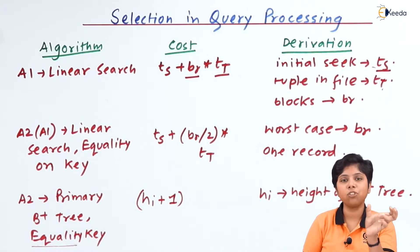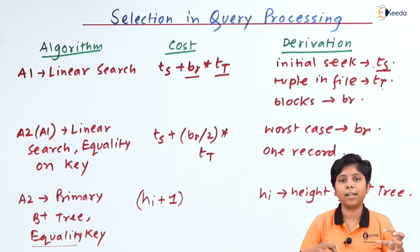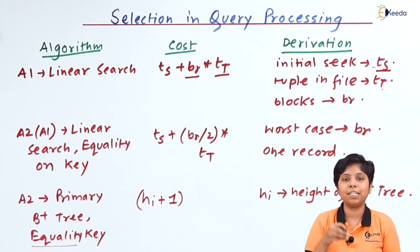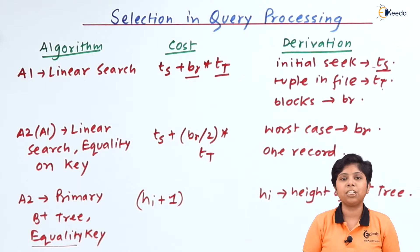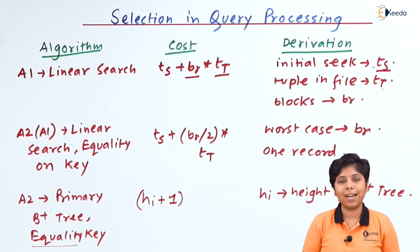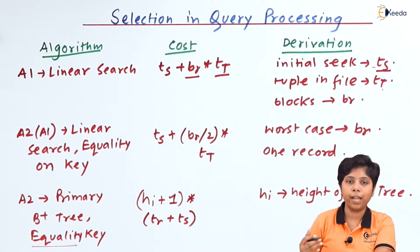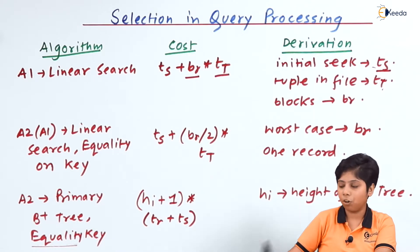We do not add ts directly here; instead, we add seeks according to each index level. In a primary B+ tree index, we traverse from the root node through parent nodes down to the leaf nodes. For every node there is an initial seek, plus a seek for the tuples at each height level. Each level defines a block, so we have hi × (tr + ts) plus 1 × (tr + ts) for the height i of h.